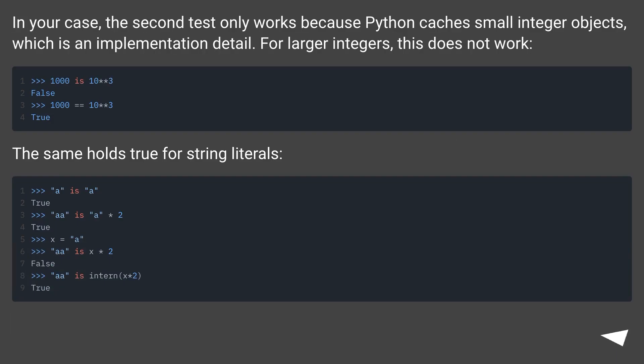In your case, the second test only works because Python caches small integer objects, which is an implementation detail. For larger integers, this does not work. The same holds true for string literals. Please see this question as well.